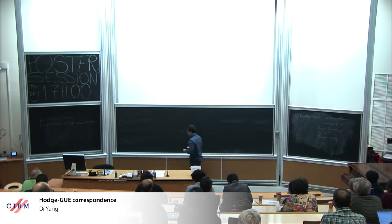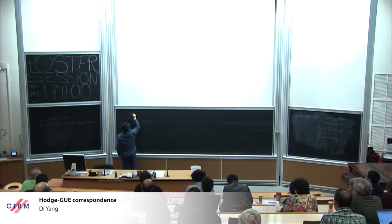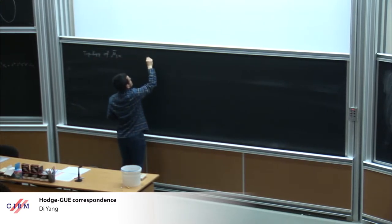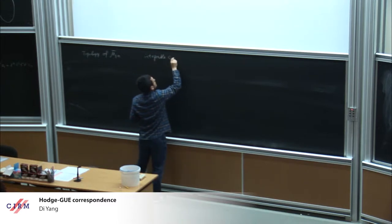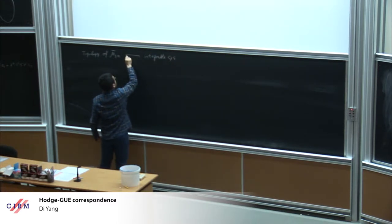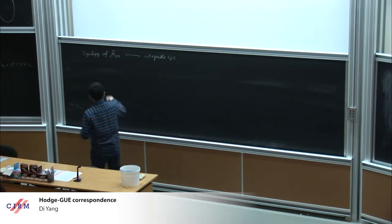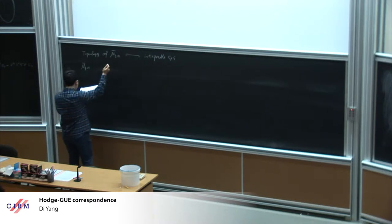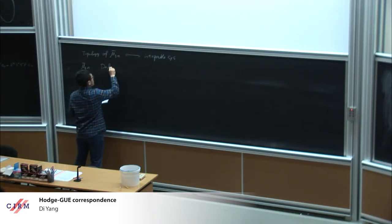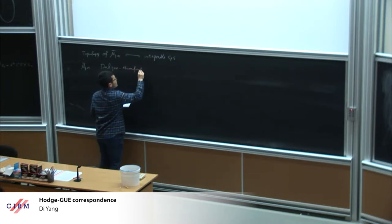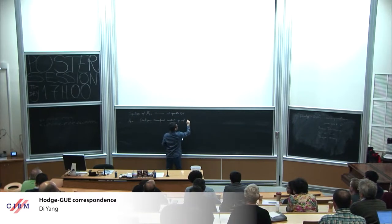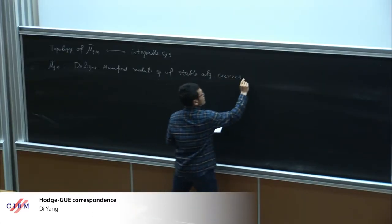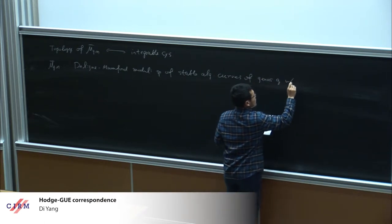The theme of our study is about the topology of MgN bar into the system. I will first explain what we study on the left-hand side. We are interested in the so-called cohomological field theory. I first recall what MgN bar is: it is the Deligne-Mumford moduli space of stable algebraic curves of genus g with n distinct marked points.